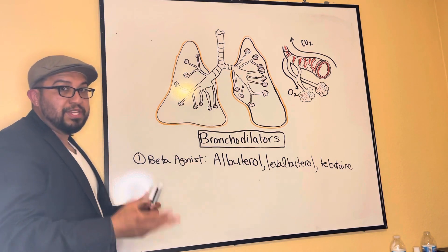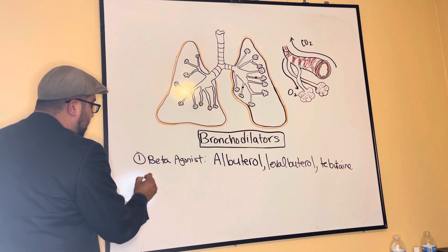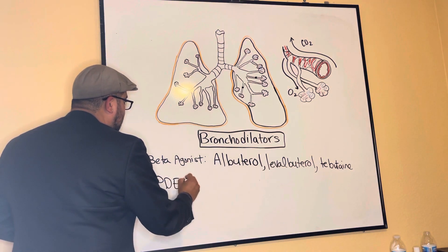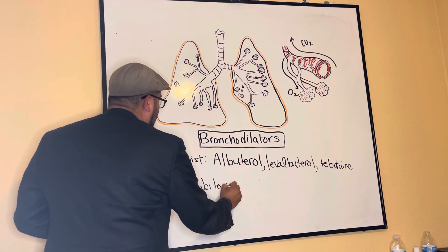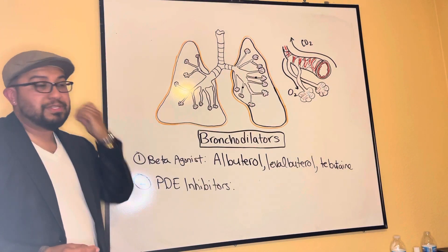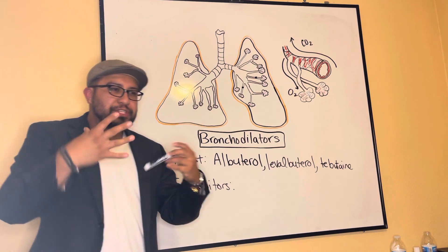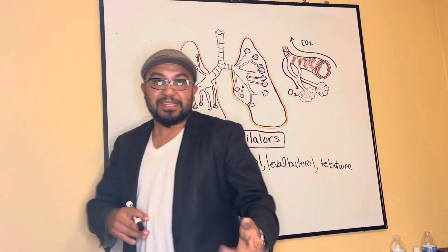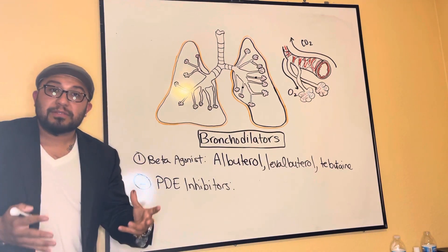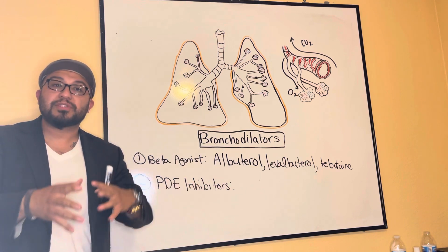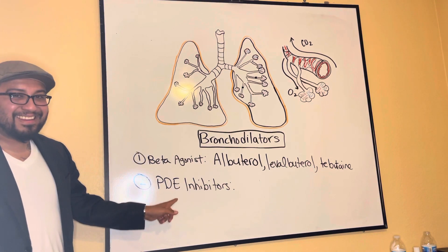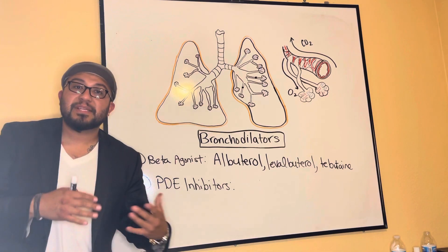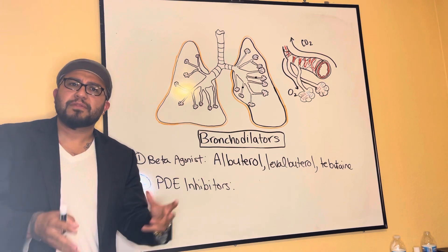The second classification of bronchodilators are PDE inhibitors — phosphodiesterase inhibitors. Phosphodiesterase is a chemical sequence that occurs inside the cells during cellular respiration involving the Krebs cycle and ATP and cAMP. The PDE inhibitor blocks a specific chain of that cycle, which prevents the cells from maximizing their utilization for contraction or stimulation of the smooth muscles in the airways.